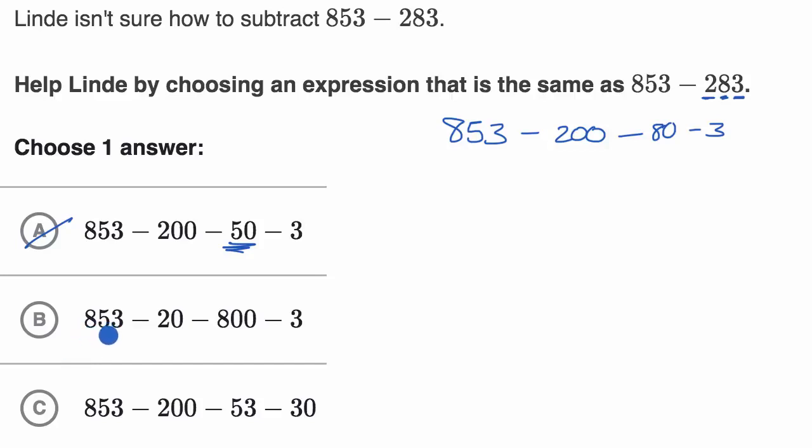Here we have 853 minus 20 minus 800 minus 3. Well, this is a little bit strange because we don't have two tens, we have two hundreds, and we don't have eight hundreds, we have eight tens. So this is also incorrect.